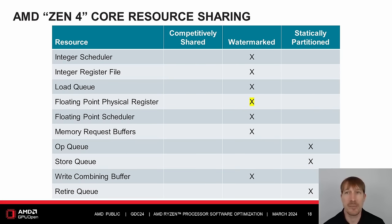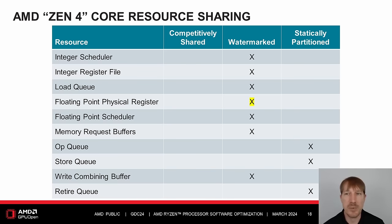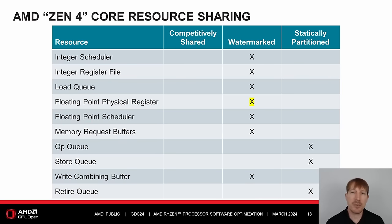Caches and TLBs are competitively shared for Zen 2, Zen 3, and Zen 4. For Zen 3, the integer scheduler, integer register file, and load queue changed from competitively shared to watermarked. For Zen 4, the floating-point physical register file has also changed from competitively shared to watermarked. These changes improved SMT fairness. Software system requirements for recommended CPU and minimum CPU often span different product generations with differences in SMT fairness and structure sizes. Consider profiling both recommended and minimum system requirements.